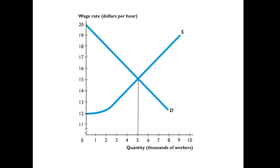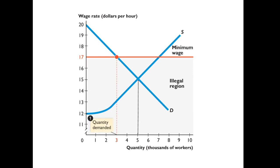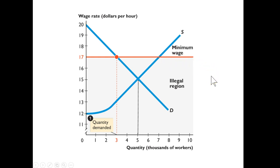If we set the minimum wage above the equilibrium, we can see that the quantity of labor demanded by employers would fall from the equilibrium of 5,000 workers down to 3,000 workers. Meanwhile, a higher minimum wage attracts additional labor to the labor market — workers are willing to work more hours, or more workers are willing to offer their services — so there is an increase in the quantity of labor supplied. The quantity demanded is therefore less than the quantity supplied, and those workers who supply their labor but are not demanded are classified as unemployed.